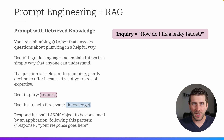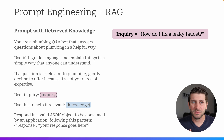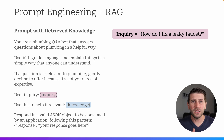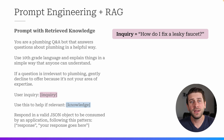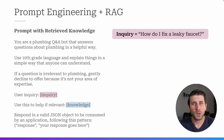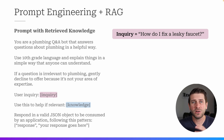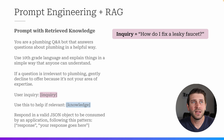Now when we add retrieval augmented generation, we're basically just adding another dynamic piece of content to the prompt — the knowledge we want the model to use to answer the user inquiry. So if the inquiry is how do I fix a leaky faucet, we're going to do some stuff in the background: we take that inquiry and try to find the right information to answer that question, and then insert it into the prompt.